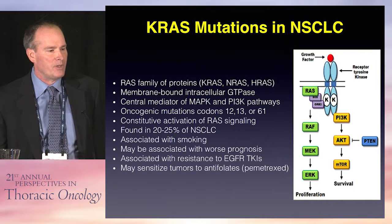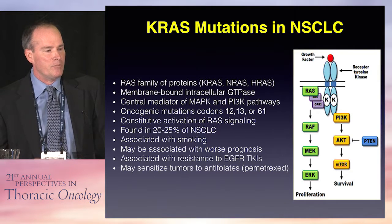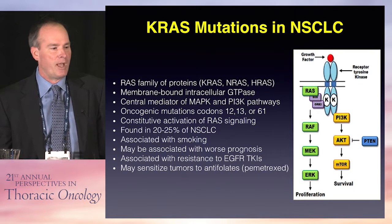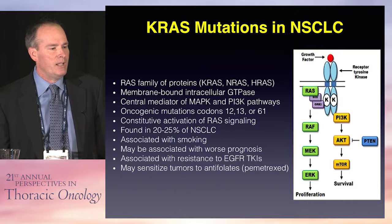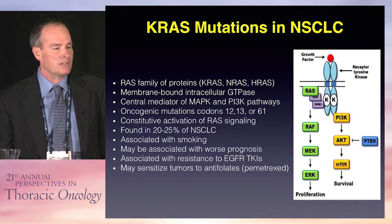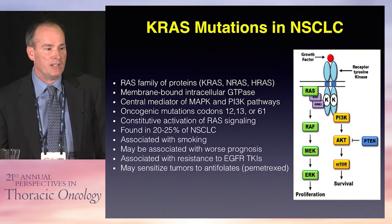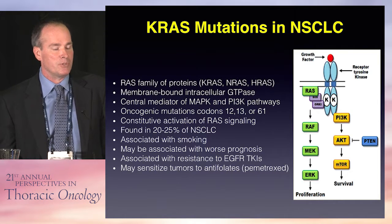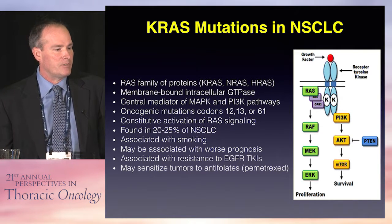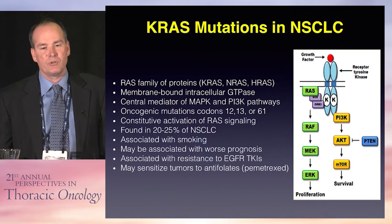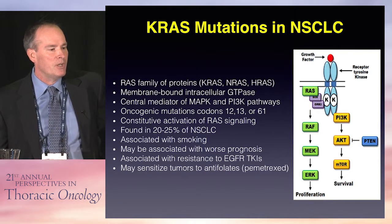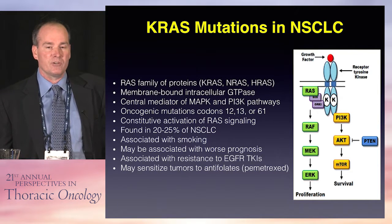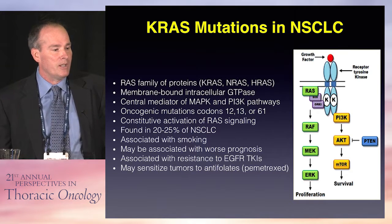KRAS is a member of the RAS family of oncogenes. It's a membrane-bound intracellular GTPase and a central mediator of MAP kinase signaling as well as the PI3 kinase mTOR pathway. Oncogenic mutations have been described in codons 12, 13, and 61, which induce constitutive activation of RAS signaling. It's the most common mutation in adenocarcinomas — about 20 to 25 percent of non-small cell lung cancers — and is often associated with smoking. It may be associated with a worse prognosis, though more recent data suggests that may be overblown. It is definitely associated with resistance to EGFR TKIs, probably because it's a mutually exclusive mutation with EGFR mutations.